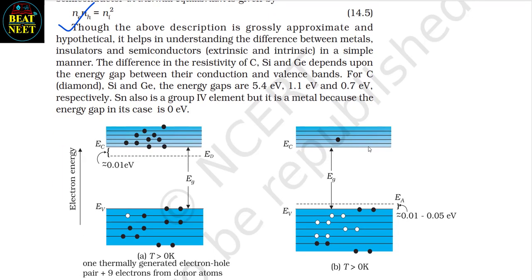Electrons rise up and holes fall down when they gain external energy. At room temperature, most of the acceptor atoms get ionized, leaving holes in the valence band. Thus at room temperature, the density of holes in the valence band is predominantly due to impurity in the extrinsic semiconductor. The electron and hole concentration in a semiconductor in thermal equilibrium is given by: ne × nh = ni². The difference in the resistivity of carbon, silicon and germanium depends upon the energy gap between their conduction and valence bands. For carbon (diamond), silicon and germanium, the energy gaps are 5.4 eV, 1.1 eV and 0.7 eV respectively. Sn is also a group 4 element but it is a metal because the energy gap in its case is 0 eV.